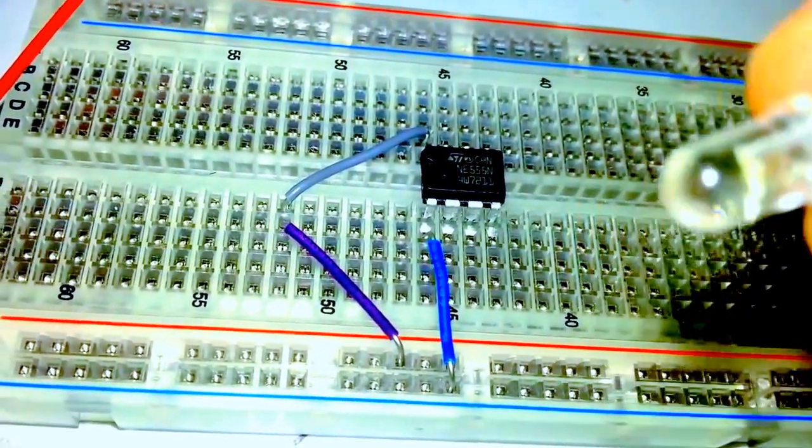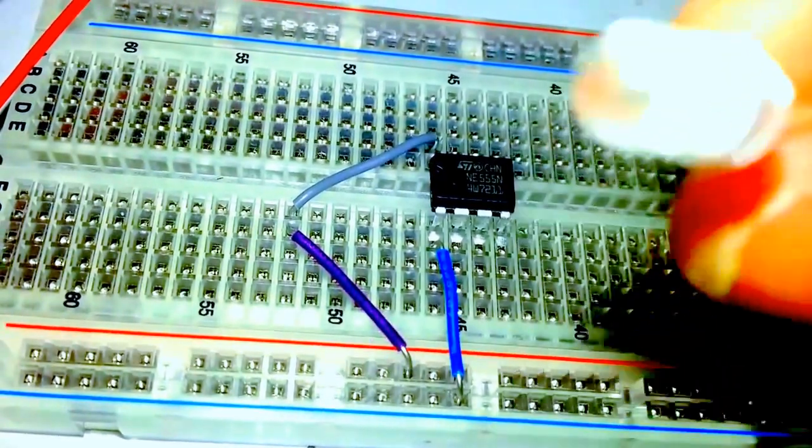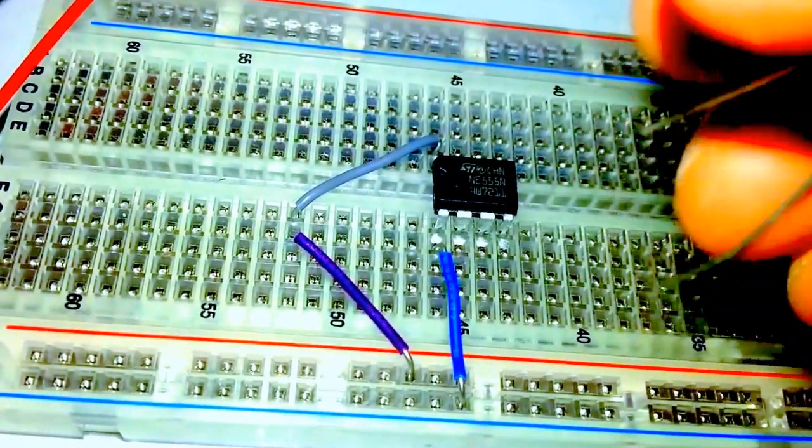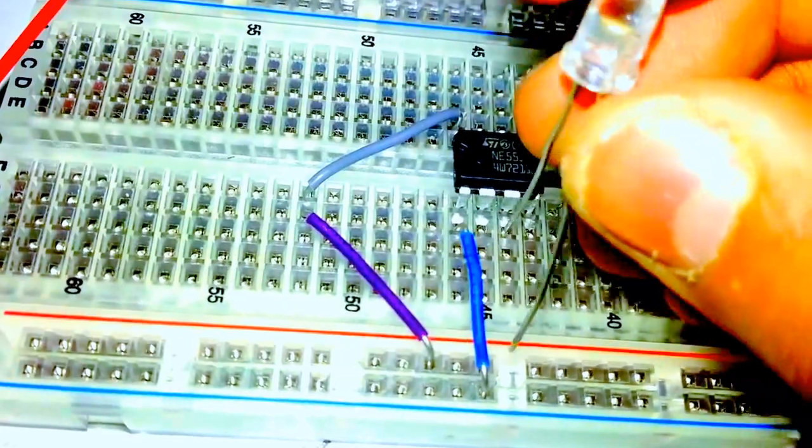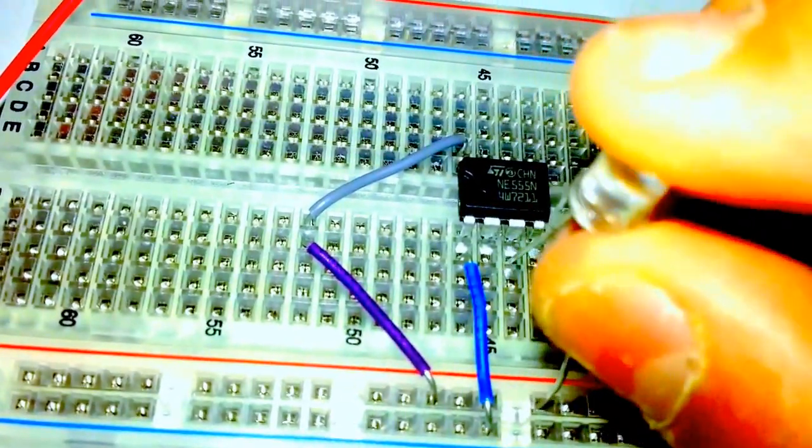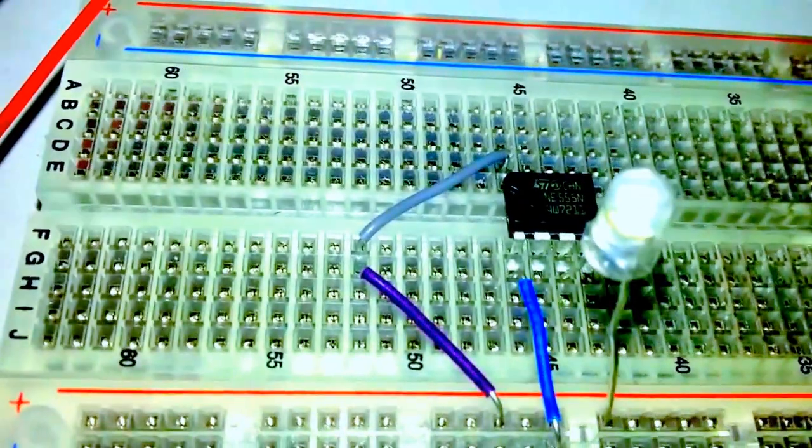So the negative goes, just a second. Okay. So this is the negative side. The negative goes to pin number three. While the positive goes to the positive line of the circuit. Okay.